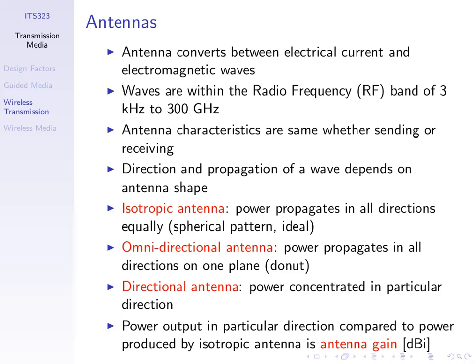More generally, a directional antenna tries to send the energy all in one direction and very little in the other direction, so that the signal goes much stronger in that one direction. The first important thing we want to introduce today is how we measure these directional and omnidirectional antennas, and how we can talk about how much greater or stronger the signal is.